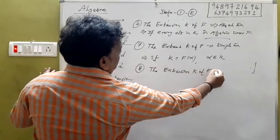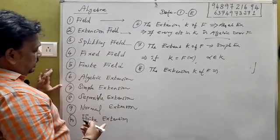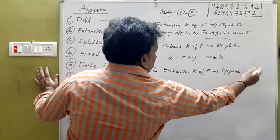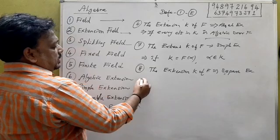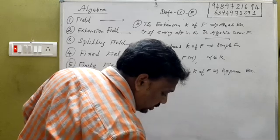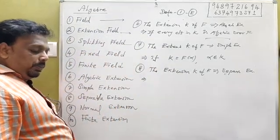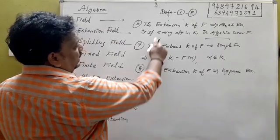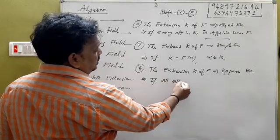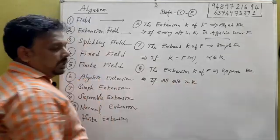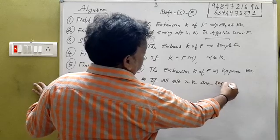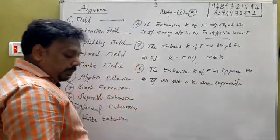That is the separable extension. The extension K of F is separable if all elements in K are separable over F.